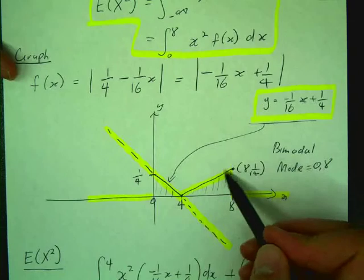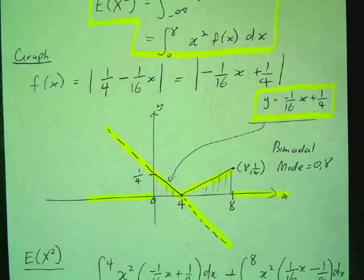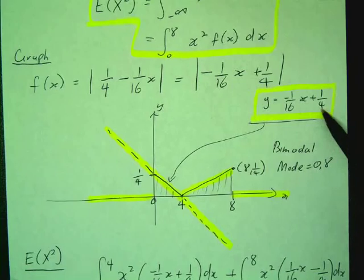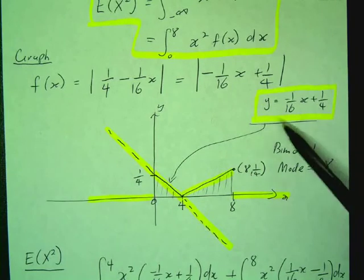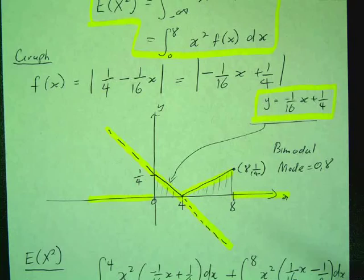So what I've got there in the solid black line is the graph of the absolute value function. And I know that because the y-intercept is a quarter and the gradient is negative 1/16. I can use let x equal 0 to find the y-intercept, let y equal 0 to find the x-intercept, and I find that to be 4.